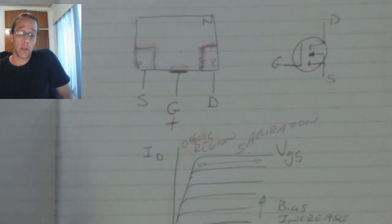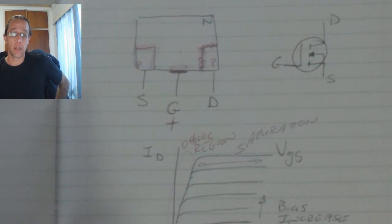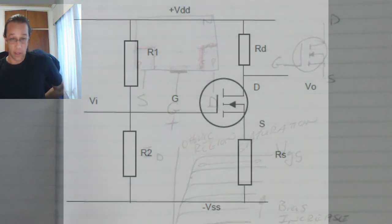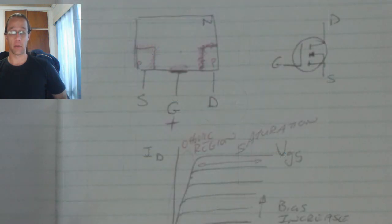First application is MOSFET as a switch. You can see it's very similar to the JFET application as a switch. And then secondly we've got the application of a MOSFET as an amplifier. In this case it's a depletion MOSFET. In this case it's an enhancement MOSFET.